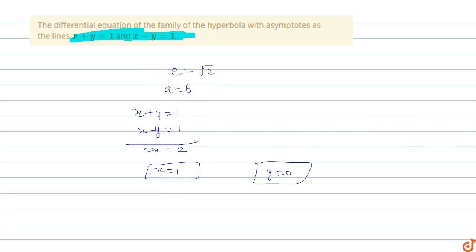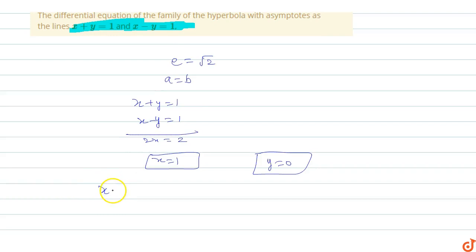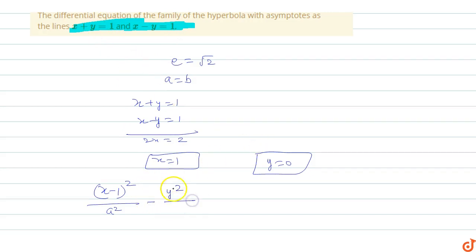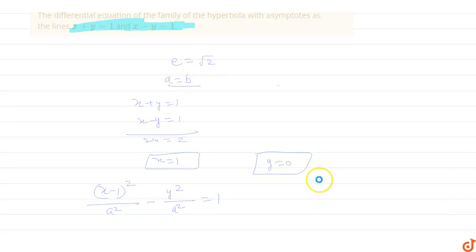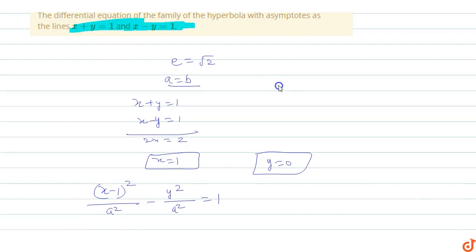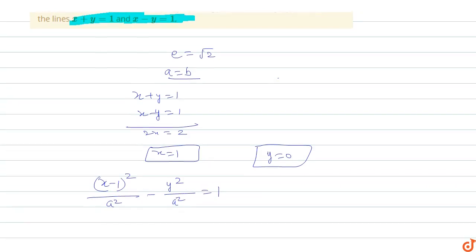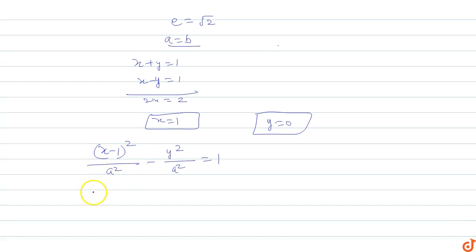The family of hyperbolas with center (1, 0) is: (x - 1)² / a² - y² / b² = 1. Since for a rectangular hyperbola a = b, we have a² = b². So the family of hyperbolas becomes (x - 1)² / a² - y² / a² = 1, where a² is the parameter. Now differentiating with respect to x to find the differential equation.